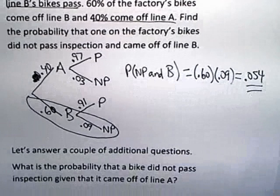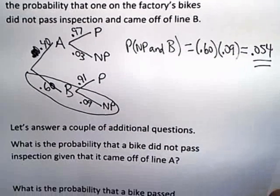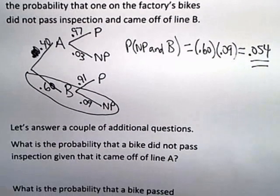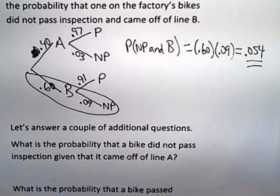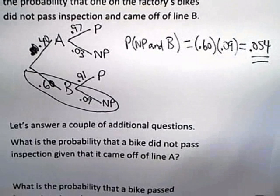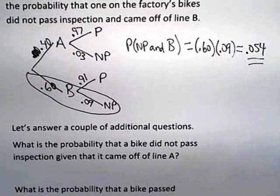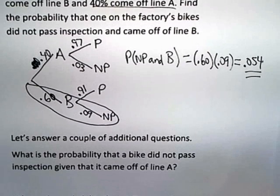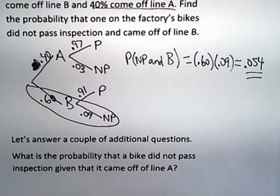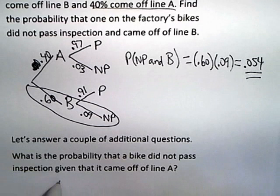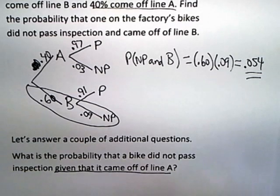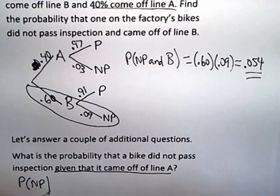I want to first ask this question. What is the probability that a bike did not pass inspection given that it came off of line A? Well, as soon as you see the given part, you know that's a conditional probability problem. So what I'm asking is, what is the probability that the bike did not pass inspection given that it came off of line A?